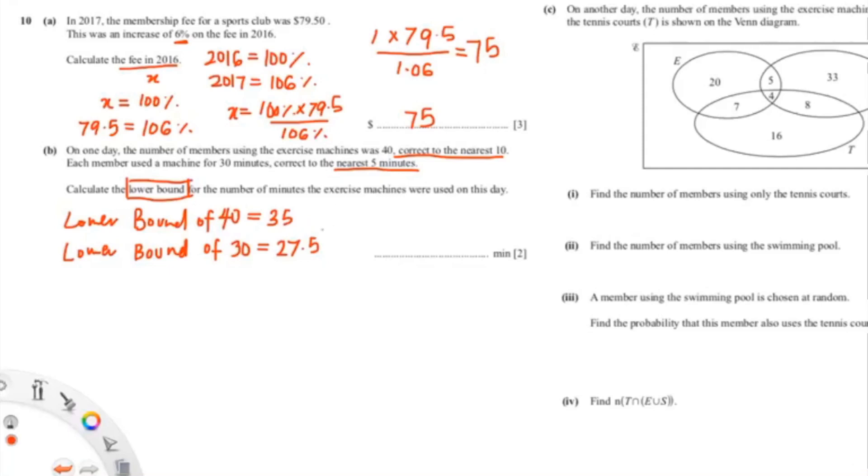Okay, so now we're just going to multiply that. 35 times 27.5 gives us... wait, that is wrong. Let me write again. 962.5. So our final answer is 962.5.